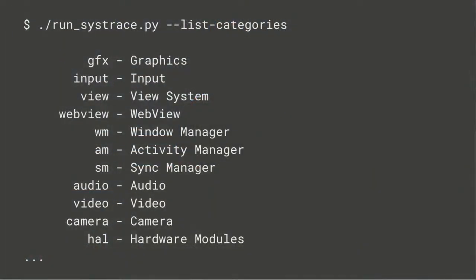The first thing you should do when you decide to start tracing a device is look at the categories available on that device. SysTrace events are separated into categories, and those categories will vary from OS version to OS version and potentially device to device. The important stuff will always be there — the core stuff you want as an app developer.